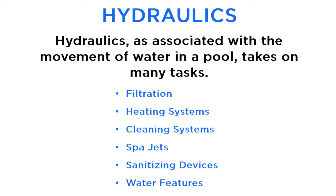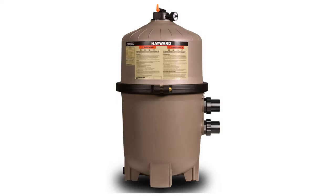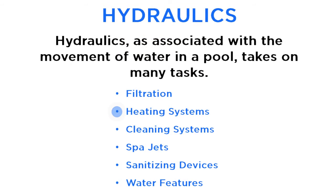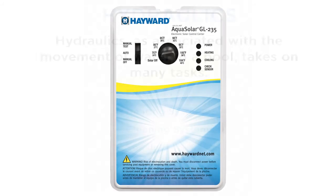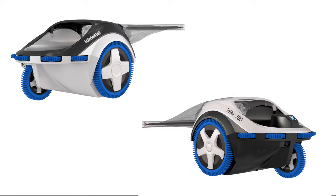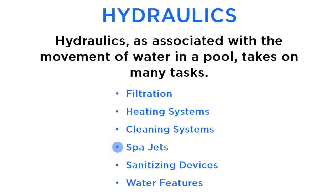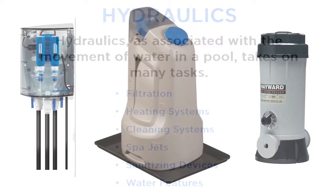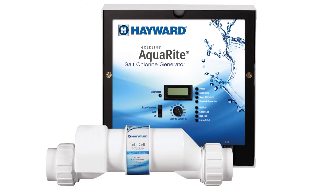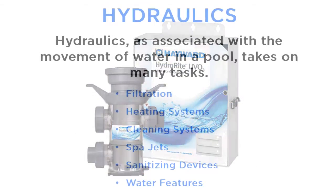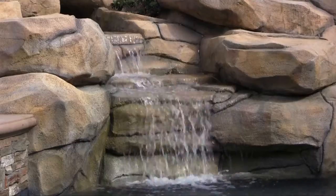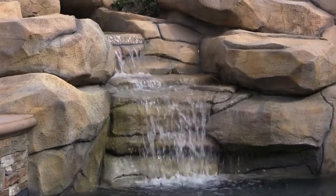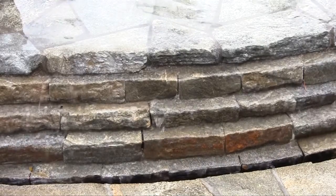Hydraulics, as associated with the movement of water in a pool or spa, takes on many tasks. The areas affected by hydraulics are: Filtration — sand, cartridge, and DE. Heating systems — gas heaters, heat pumps, or solar. Cleaning systems — suction, pressure, and robotic cleaners. Spa jets — different styles and GPM requirements. Sanitation devices — liquid and tablet feeders, salt chlorination, ozone, and ultraviolet. Water features — waterfalls, negative edges, fountains, deck jets, and more. As the industry grows, there will be more added to this list.